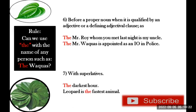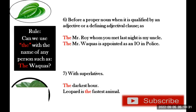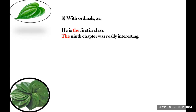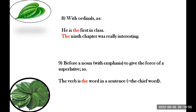The seventh usage is with superlatives. For example: 'The darkest hour', 'The leopard is the fastest animal.' Darker — comparative degree; darkest — superlative degree. The eighth usage is with ordinals. Ordinal means rank or sequence — first, second, third. For example: 'He is the first in class', 'The ninth chapter was really interesting.'